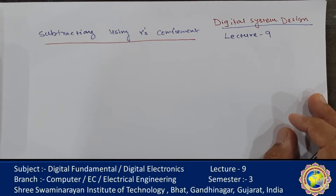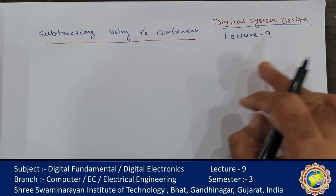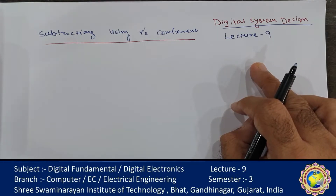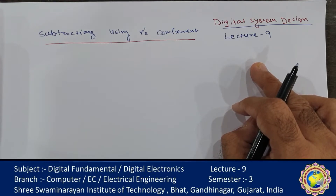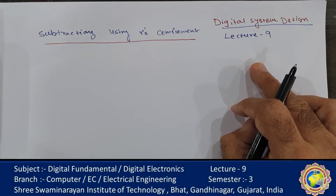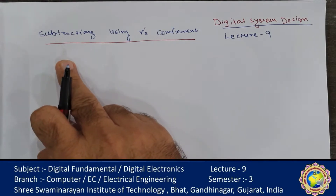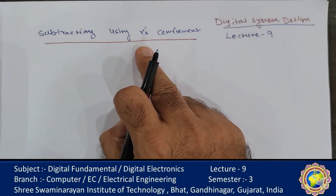Welcome, student, in the lecture series of Digital System Design. Today is the 9th lecture. In the last lecture, we discussed the r-1's complement for decimal, binary, and all base number systems, where we also discussed that the complement method is useful for the simplification of the subtraction method. Today we discuss how we can perform the subtraction arithmetic operation using the r's complement.